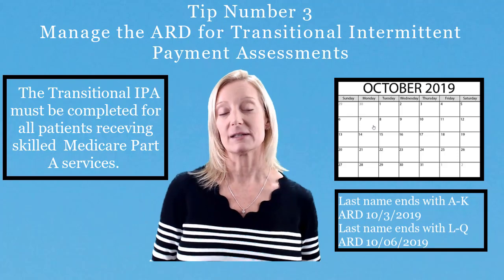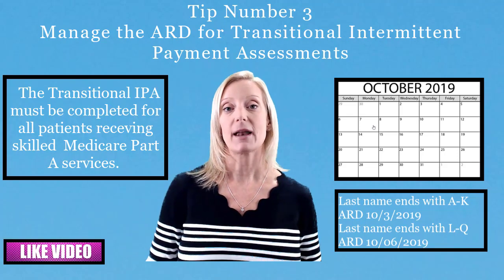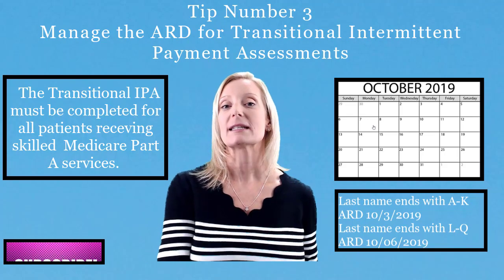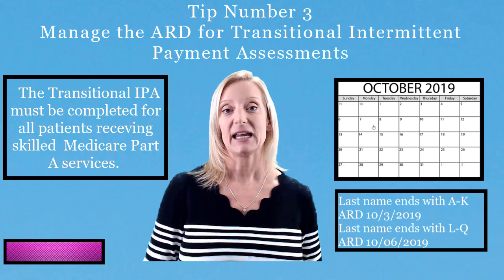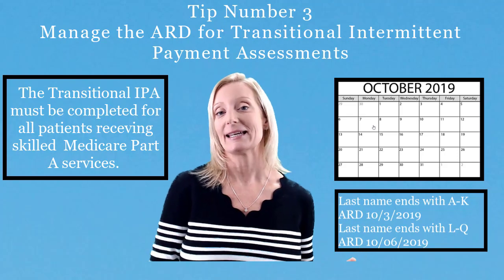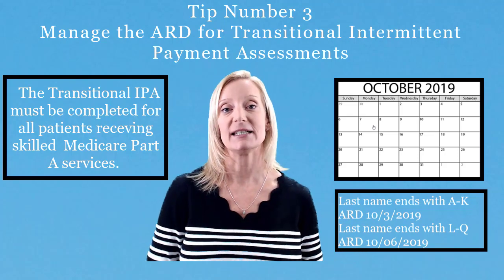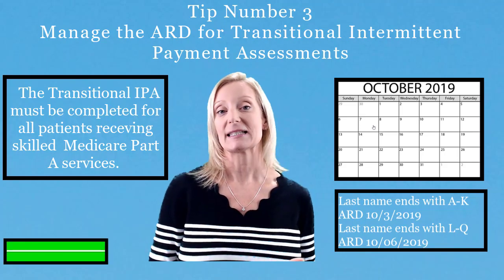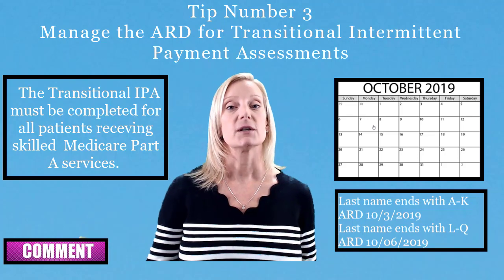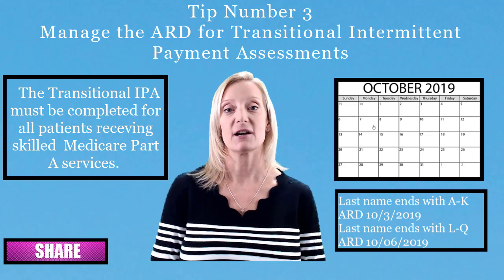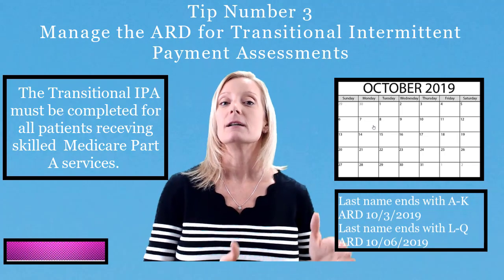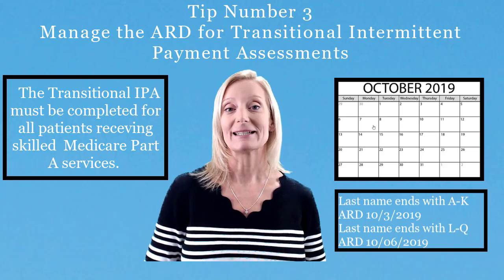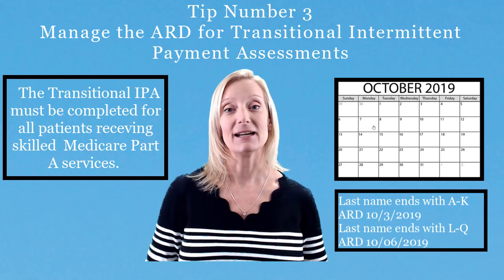It doesn't have to all be on the same day. So if you have a high number of Medicare — let's say you have 15 Medicare assessments — you may want to say residents who have the last name that begins in A and ends in K, I want to have their ARD on 10-3. And then the residents who have the last name that starts with L and goes to Q, you could complete their ARDs on 10-6. So consider making a system, a process, so you know when you're going to complete an assessment for your residents and your IDT understands as well.